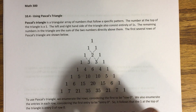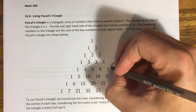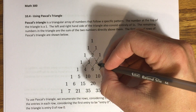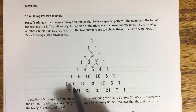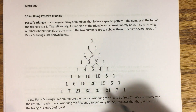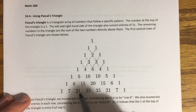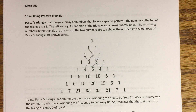What about the numbers in this row? Four is equal to one plus three. Six is equal to three plus three. And four is equal to three plus one. All of the numbers come from the sum of the two numbers directly above them. Twenty-one is six plus fifteen. Thirty-five is twenty plus fifteen. That's how you create Pascal's triangle.